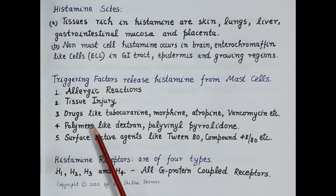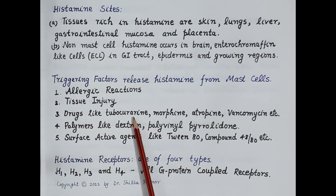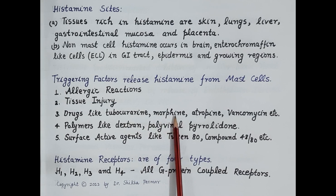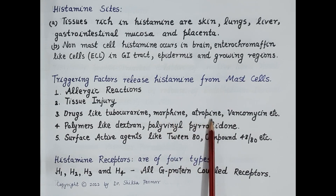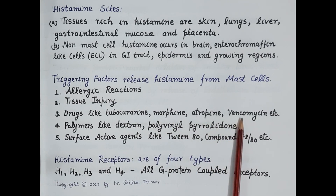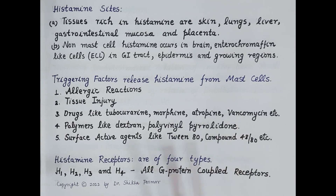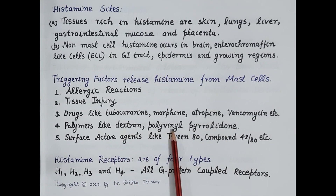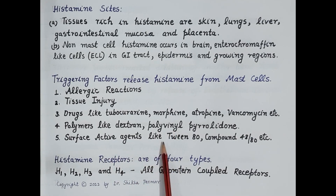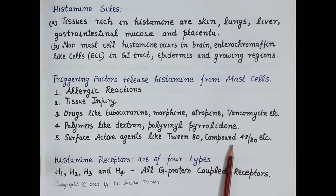Apart from this, drugs like tubocurarine, morphine, atropine, and vancomycin also stimulate release of histamine. Polymers like dextran and polyvinylpyrrolidone, as well as surface-active agents like Tween 80 and compound 48/80, also release histamine from mast cells.